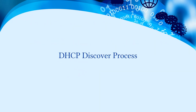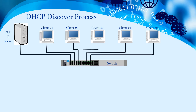Now we'll understand the DHCP Discover process. In this picture I have a DHCP server and five clients. The DHCP server is configured with the scope range 192.168.11.1 to 192.168.11.100, so client devices will get their IP address within this range.